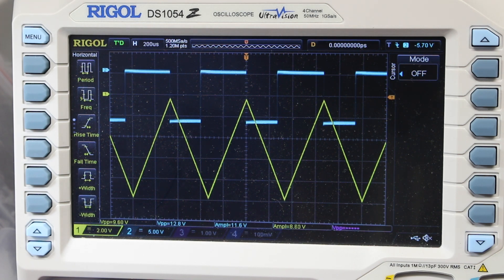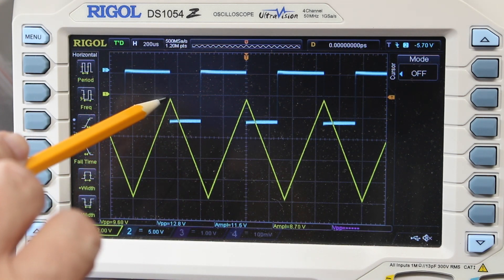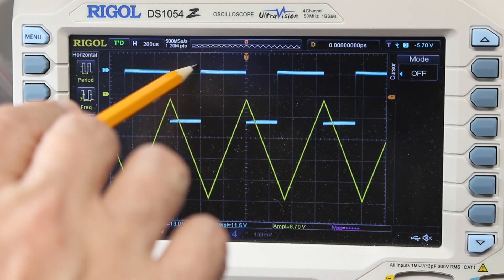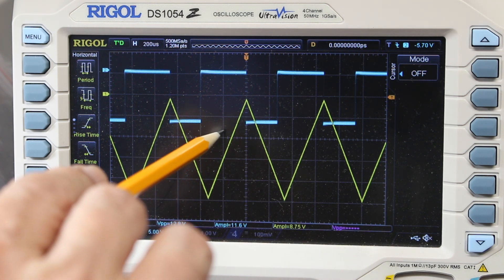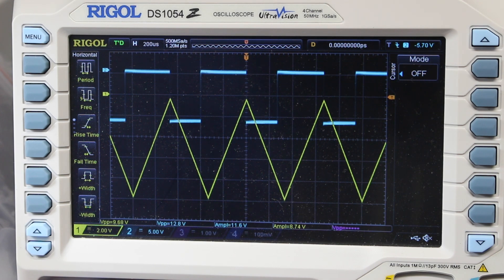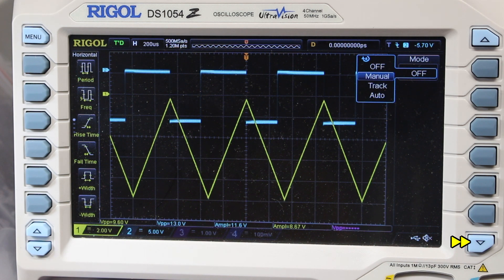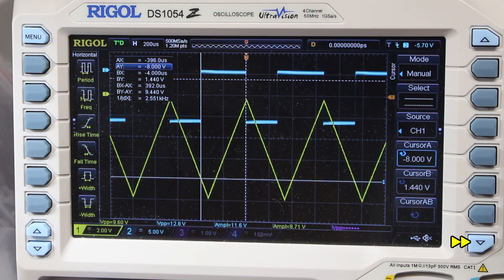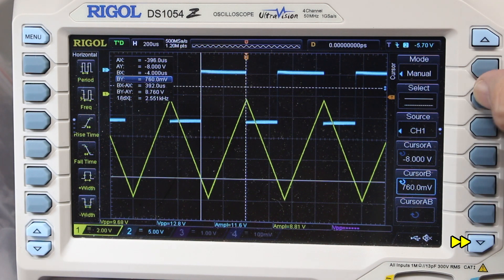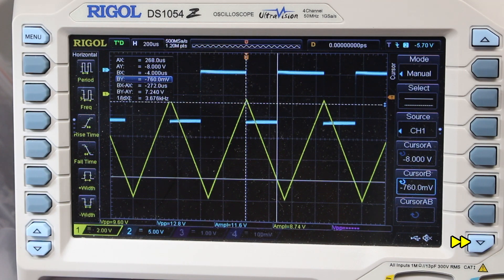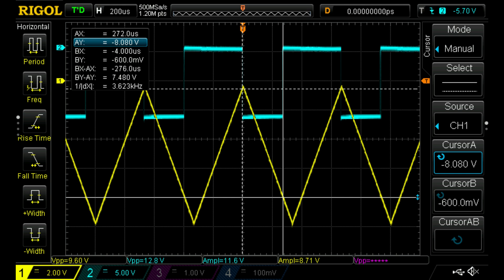I'm seeing about what I expect to see. As the current increases, the voltage output from the current sense ramps downward. At about negative 8 volts, the Schmidt trigger abruptly switches from negative 12 volts to ground. On the way back up, it's switching back again when the current sense output drops to about half a volt. Let's put the scope cursors on and measure a little more accurately. It's looking good. It's triggering at 8.1 volts and 0.6 volts. I'm happy with those numbers.